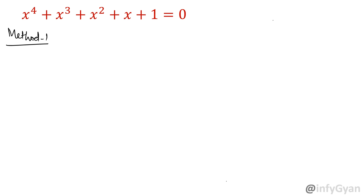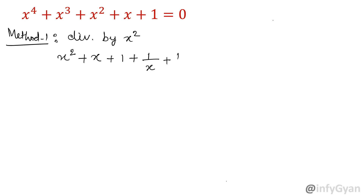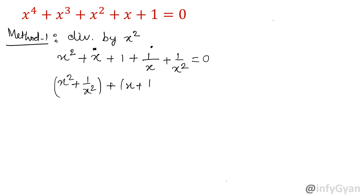Divide both sides by x squared. Once we divide, the equation will be x squared plus x plus 1 plus 1 over x plus 1 over x squared equal to 0. Now collect the first and last terms in one bracket — x squared plus 1 over x squared — and the middle terms in another bracket: x plus 1 over x plus 1 equal to 0.